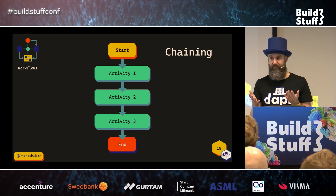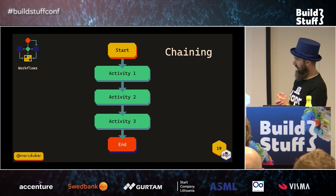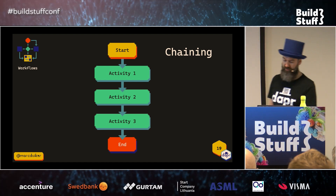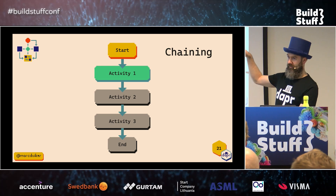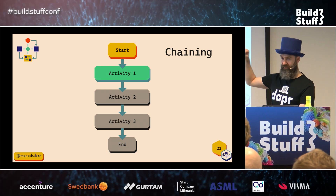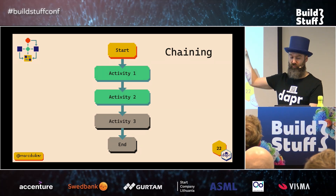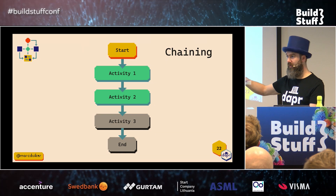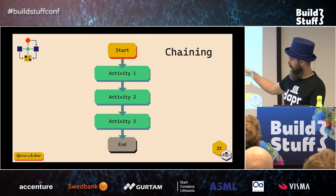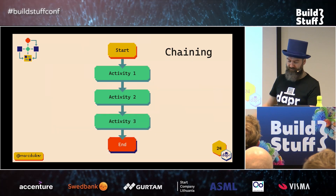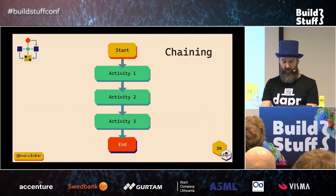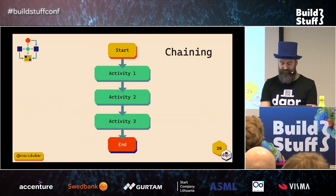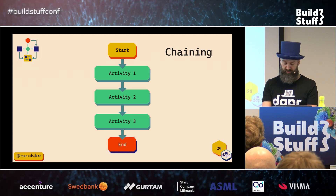The first pattern is activity chaining, or task chaining. This is where the order is important — you start with activity one, and the orchestrator will wait until activity one is finished, then it moves on to activity two, and when that's finished it moves to activity three, and then it's done. The order of execution is important here.